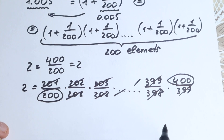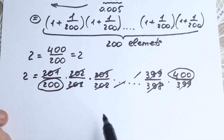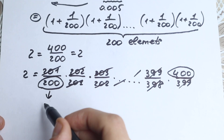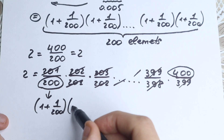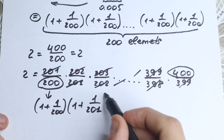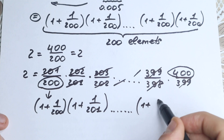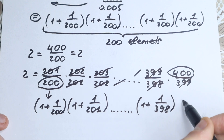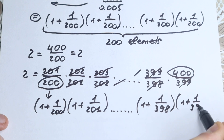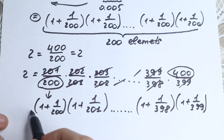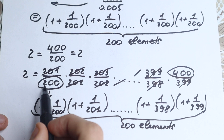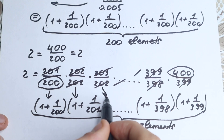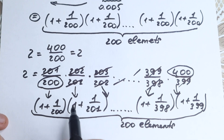Take a look closely: 201 over 200 can be written as 1 plus 1 over 200; 202 over 201 can be written as 1 plus 1 over 201; and step by step we continue, getting 1 plus 1 over 398, and the last step is 1 plus 1 over 399. So we have 200 elements total, starting from denominator 200 and finishing at denominator 399.